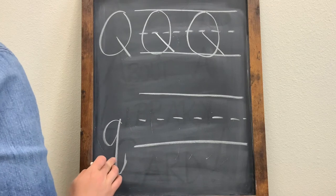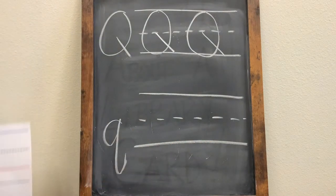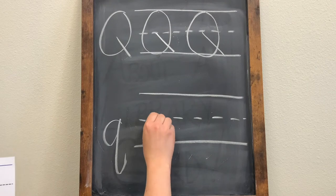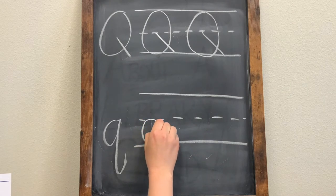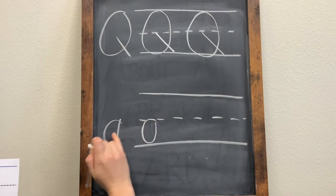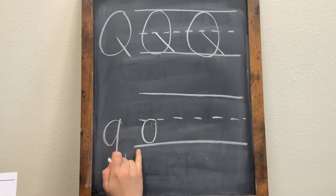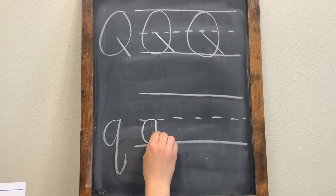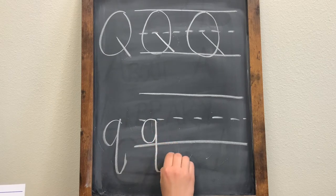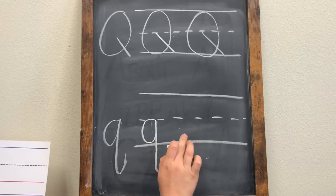For a lowercase letter Q, it looks very different than the uppercase. We are going to draw a small circle first, only going from the middle line all the way down to the bottom, and then we are going to draw sort of a backwards letter J that extends down below this line and hooks backwards.